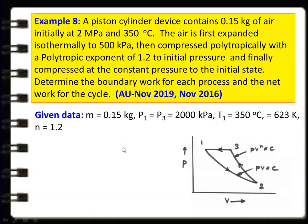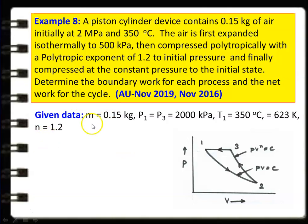Example 8: A piston-cylinder device containing 0.15 kg of air initially at 2 MPa and 350°C (623 K). The air is first expanded isothermally (process 1→2) to 500 kPa, then compressed polytropically with polytropic exponent 1.2 (process 2→3), then finally compressed at constant pressure back to the initial state (process 3→1). Determine the boundary work for each process and the net work done for the cycle. Given: m = 0.15 kg, P1 = P3 = 2000 kPa, T1 = 350°C = 623 K, polytropic index n = 1.2.